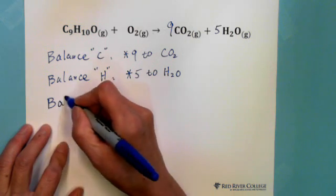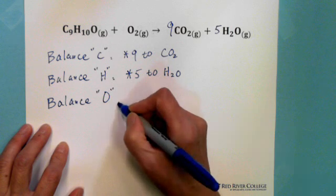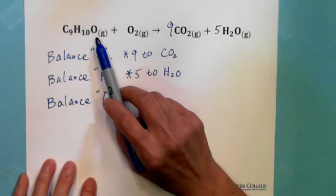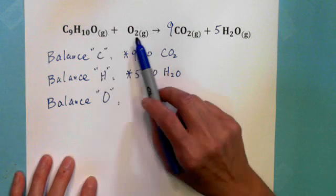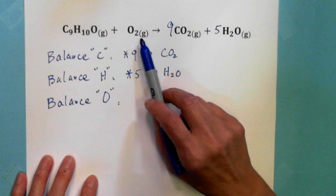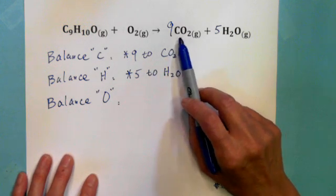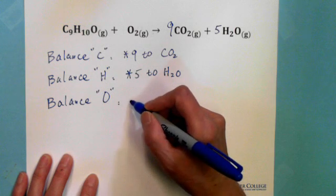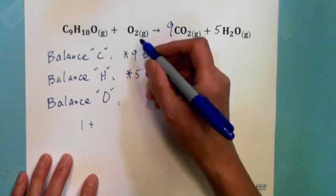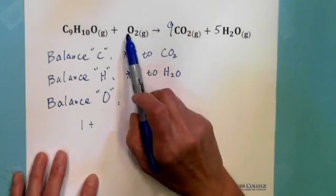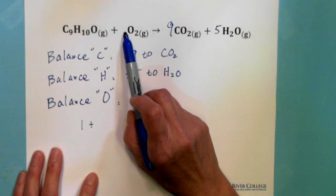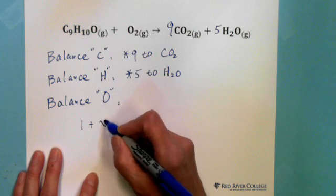Last step: balance oxygen. This question is a little bit tricky. Before the reaction, there is one oxygen in the compound plus the oxygen gas. We don't know the coefficient for O2, so we set it as X — meaning 2X oxygen from O2. We leave the compound coefficient as one so we don't change the carbon and hydrogen counts.